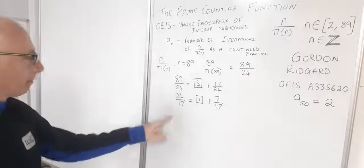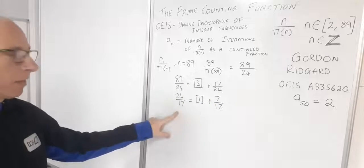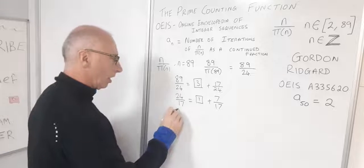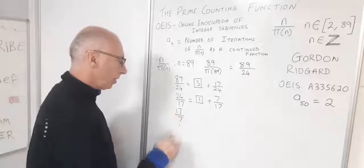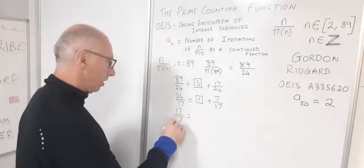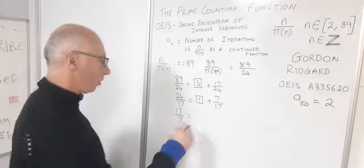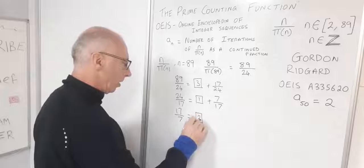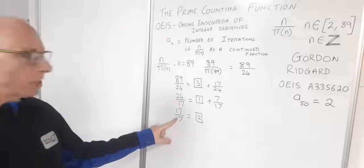Let's bring this 7 over 17 down to here. The reciprocal of that again, let's take the integer of that. 17 over 7 we know is 2 as an integer and our leftover is going to leave us 3 sevenths.